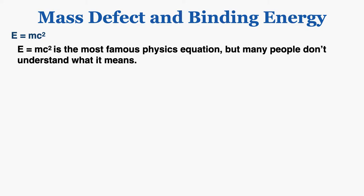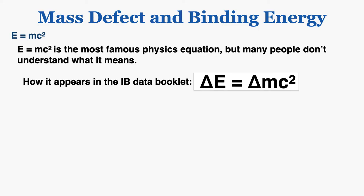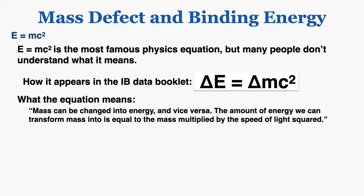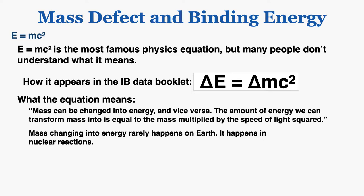Before we talk about binding energy, I need to talk about E equals mc squared — easily the most famous physics equation in existence, but many people don't actually understand what it means. As it appears in the IB physics data booklet, a change in energy equals a change in an object's mass multiplied by c squared. This means mass can actually be changed into energy and vice versa — you can destroy mass by turning it into energy, and the amount of energy equals the mass multiplied by the speed of light squared. This mostly happens in nuclear reactions.